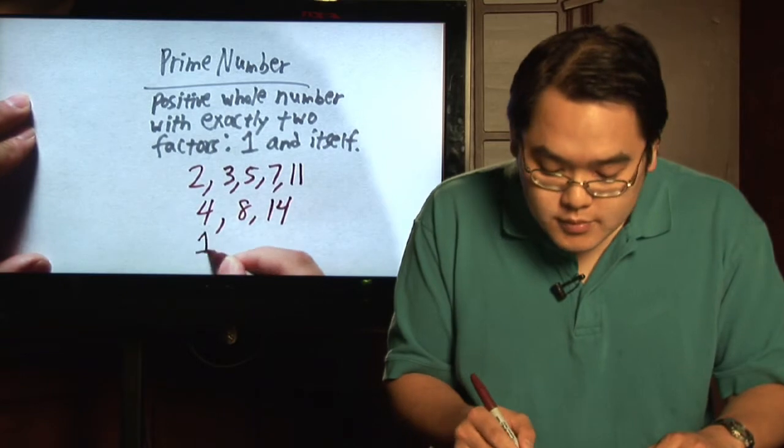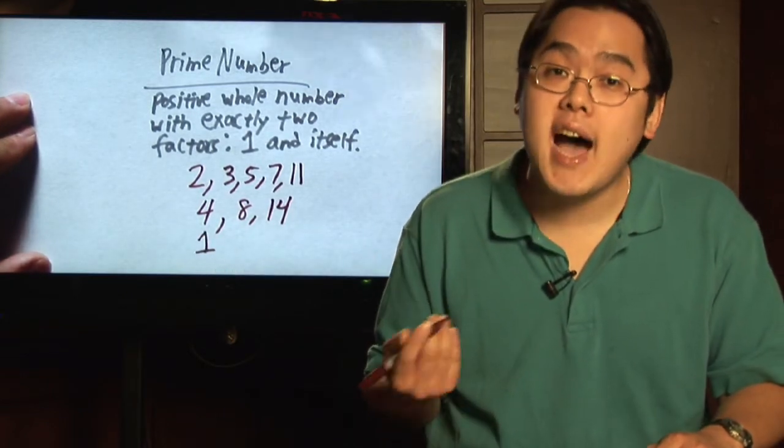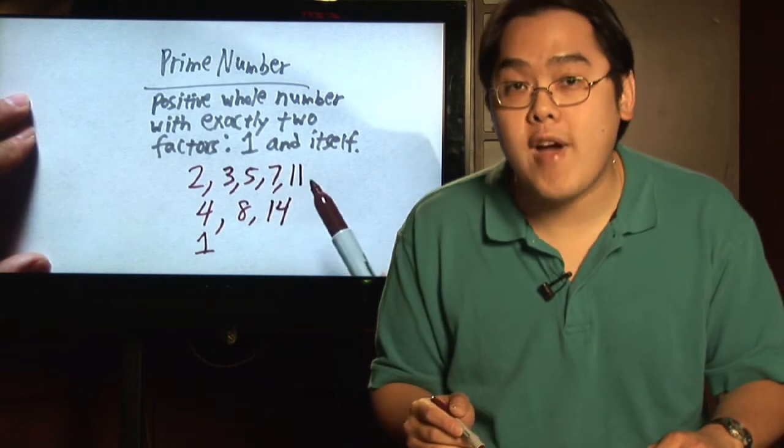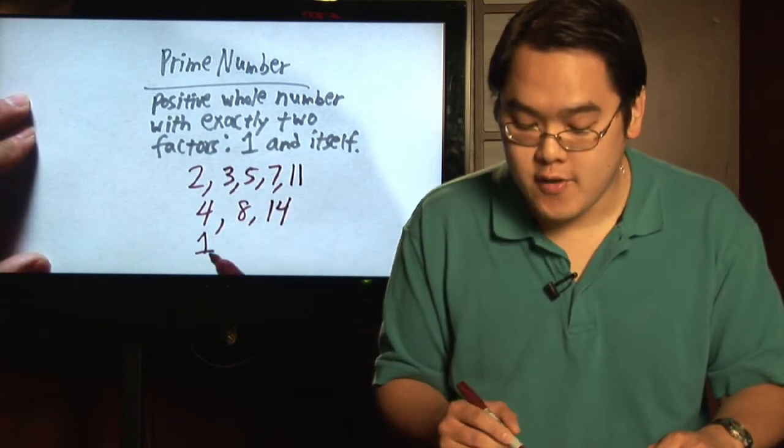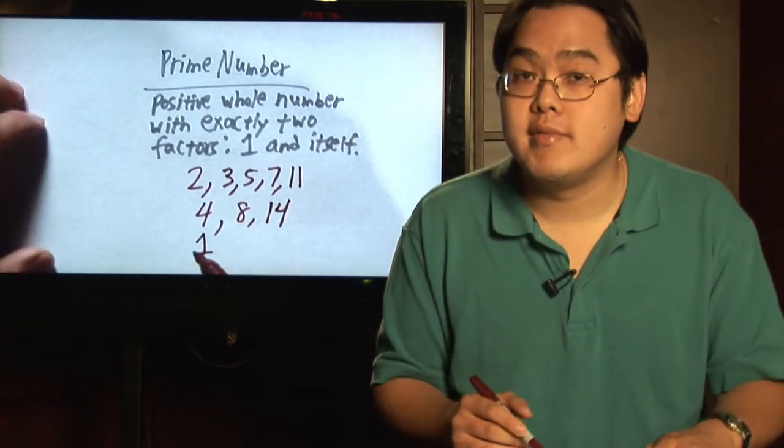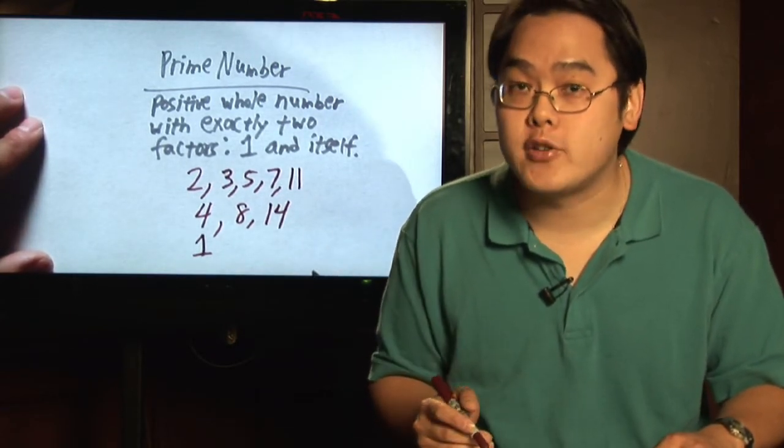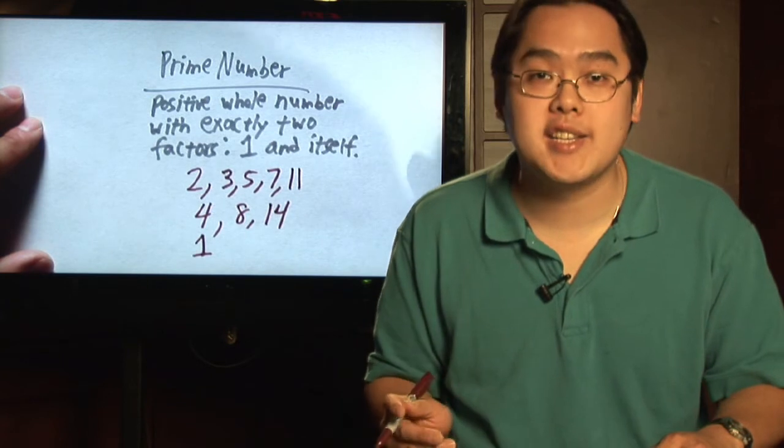Now, the number one itself is not a prime number because, by definition, a prime number must have exactly two factors: one and itself. For the number one, that's only one factor. You need to have two factors, so the number one is not prime.